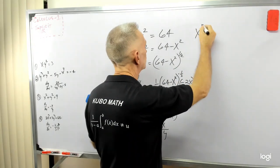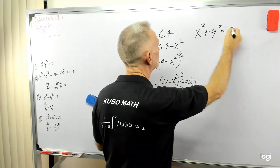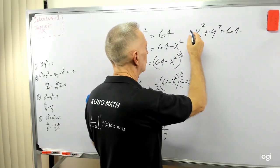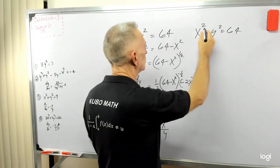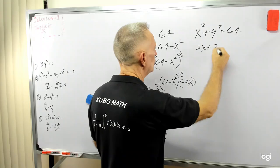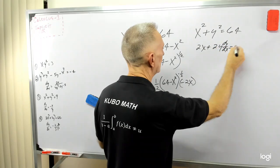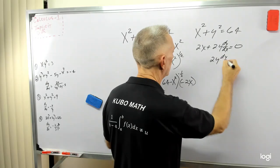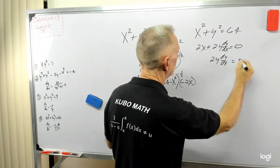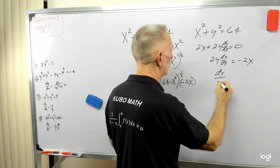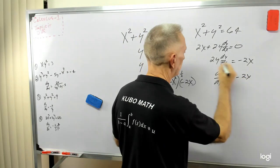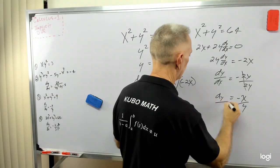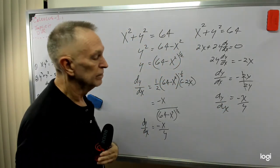Now let's perform that same function through implicit differentiation. We have x squared plus y squared equals 64. Taking the derivative with respect to x: 2x plus 2y dy dx equals 0. The derivative of 64 is 0. So 2y dy dx equals minus 2x. Dividing both sides by 2y gives dy dx equals minus x over y. Isn't that cool? Same answer!